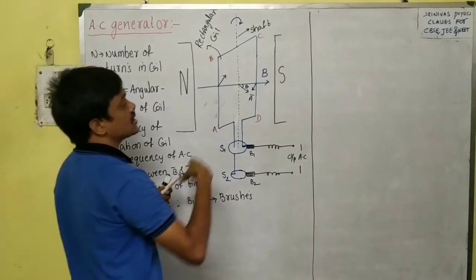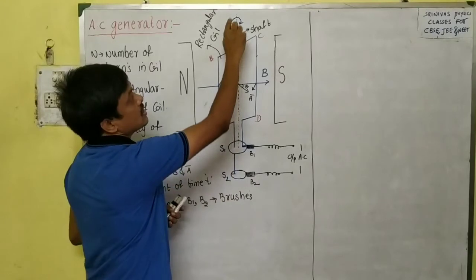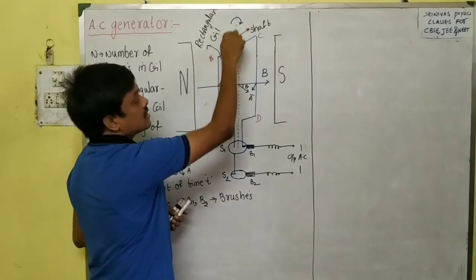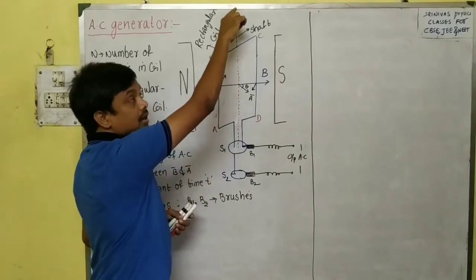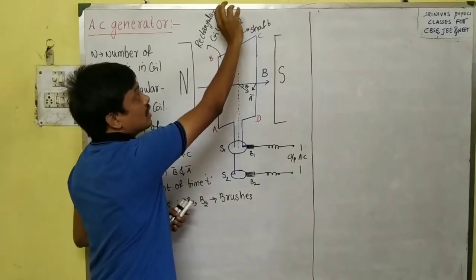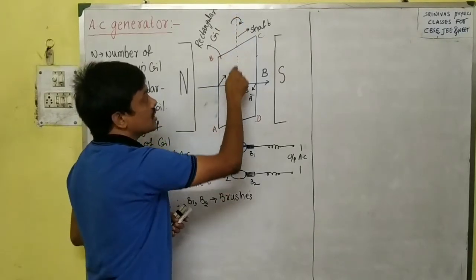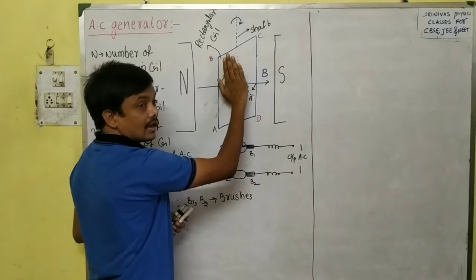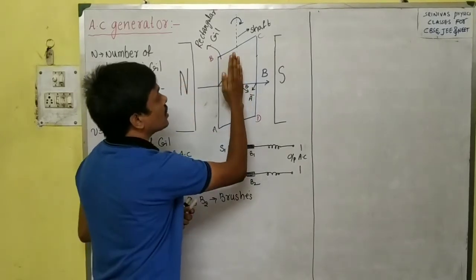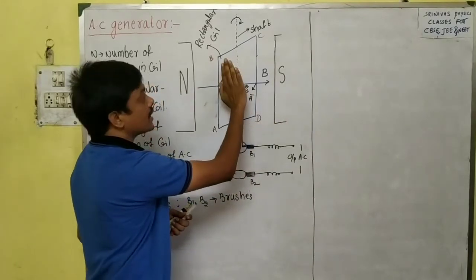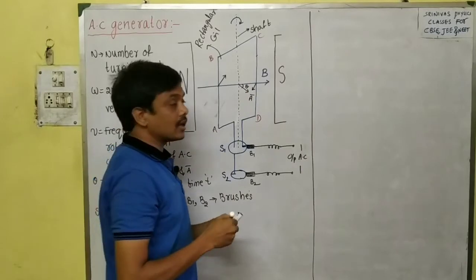To make the coil rotate, we connect turbines to a shaft — a rod — and this shaft is connected to turbines in hydropower stations. When water falls on the turbines, the turbines rotate, and along with them the shaft rotates. The rectangular coil is connected to the shaft, so the coil also rotates. When the coil rotates between the two poles of the magnet, the magnetic flux linked with the coil changes, because the magnetic flux formula is...